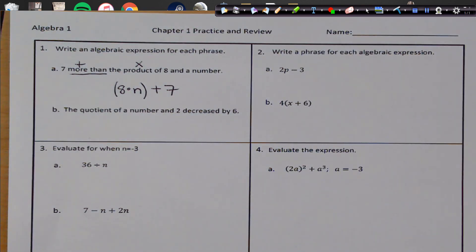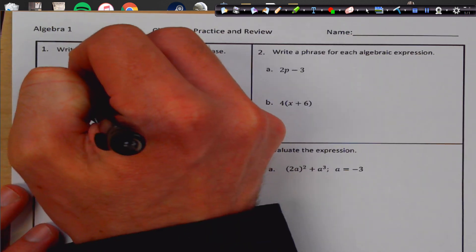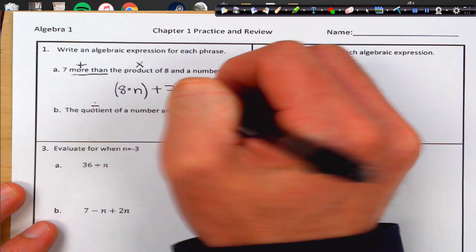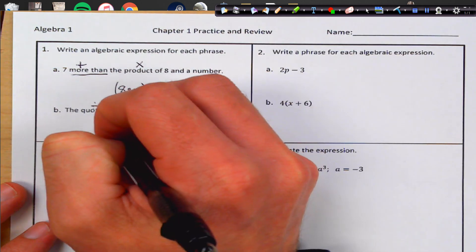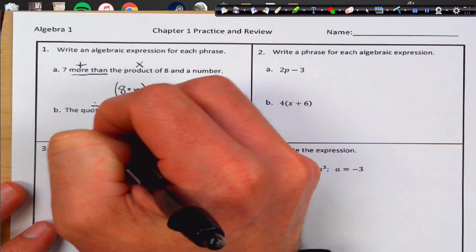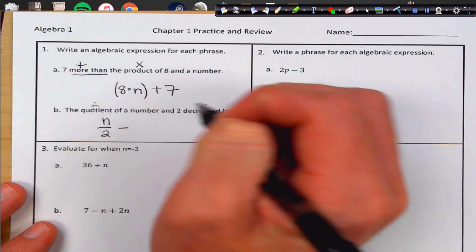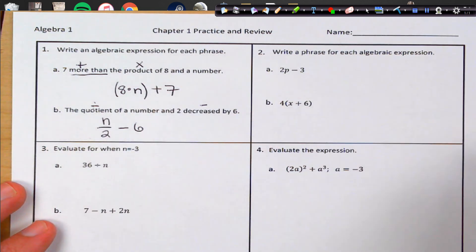Part B, it says the quotient of a number and 2 decreased by 6. So the quotient of a number, that's going to mean division, and decrease is subtraction. So we're going to do the quotient of a number divided by 2, decreased by 6. And there we go.